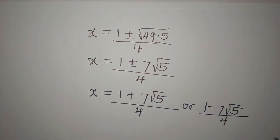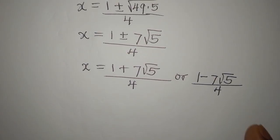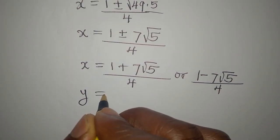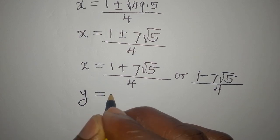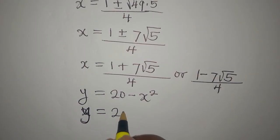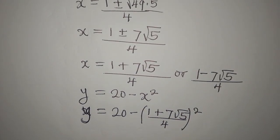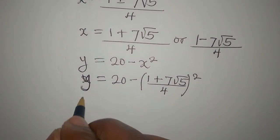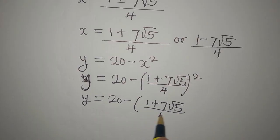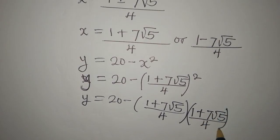We also need to find the y values. Going back to equation 3 where y equals 20 minus x squared, let's work with the first value of x. So y will be equal to 20 minus the quantity 1 plus 7 root 5 over 4, all squared. That means y equals 20 minus the bracket 1 plus 7 root 5 over 4, multiplied by 1 plus 7 root 5 over 4.